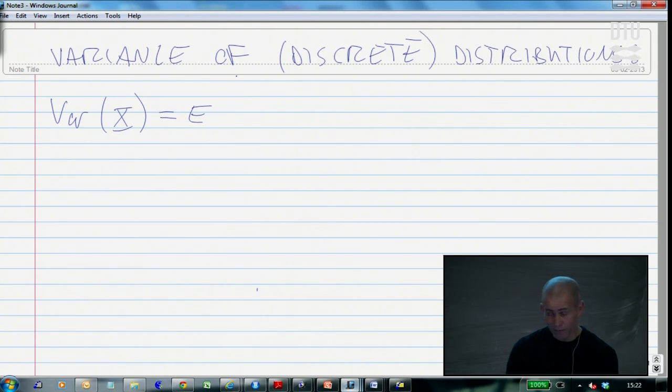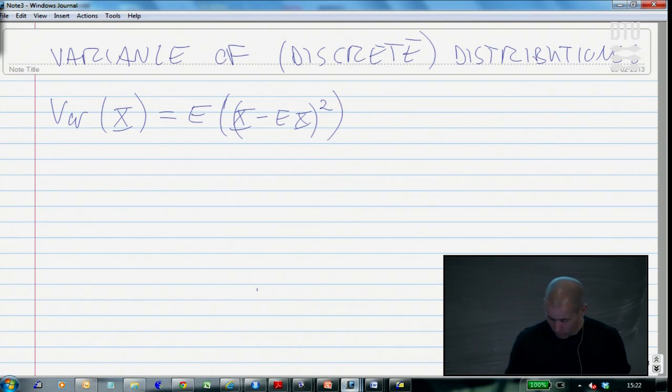The defining formula, as you were taught, is that it's the expected squared deviance, or squared difference to the mean of the distribution.